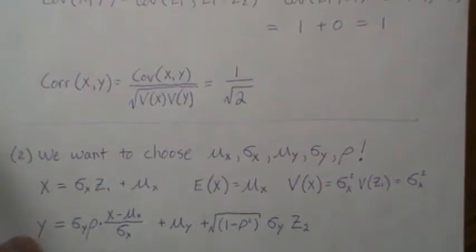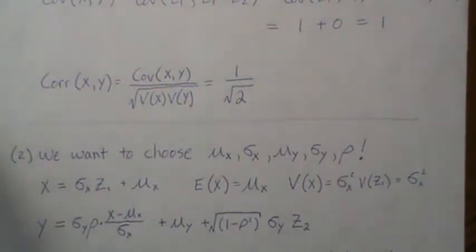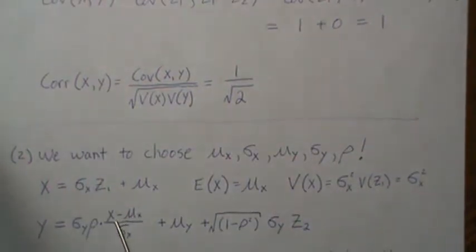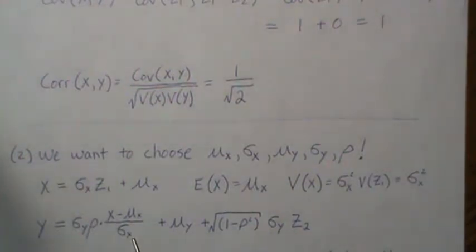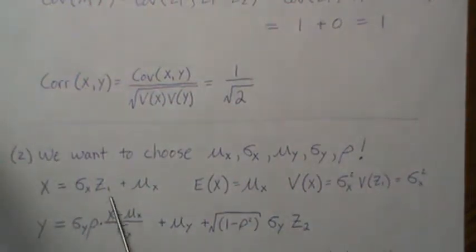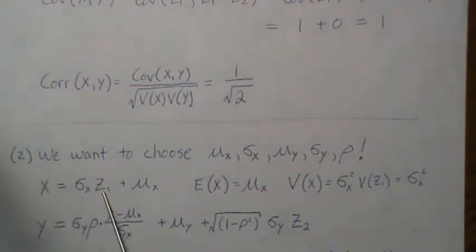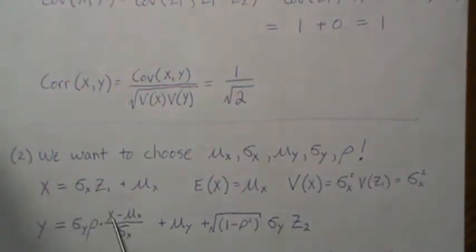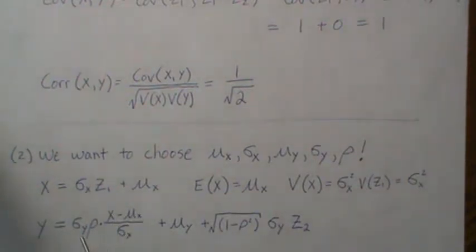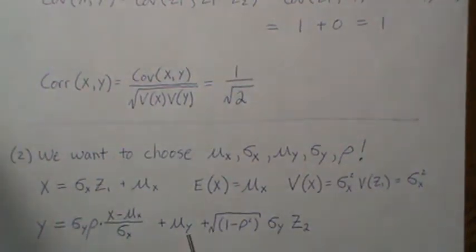It turns out for y we take x minus μx divided by σx — which is just z1 — and multiply by σy times ρ. We then add μy and a term involving z2 times σy times the square root of (1 − ρ²). The z1 here must be the same z1 used in generating x.